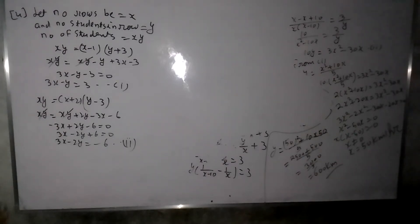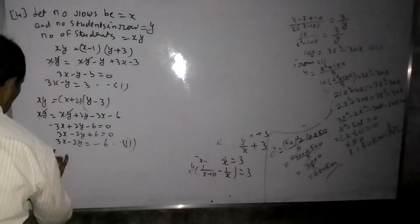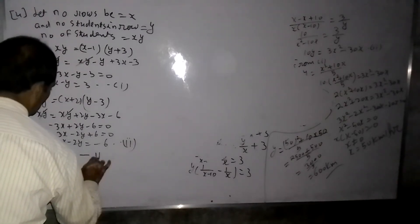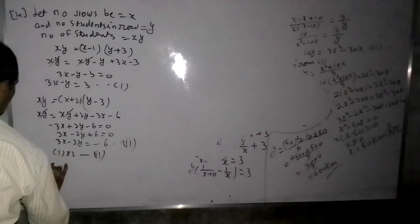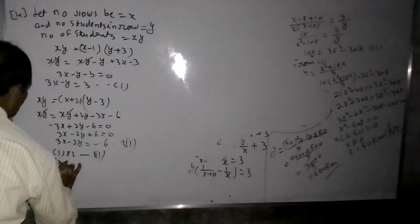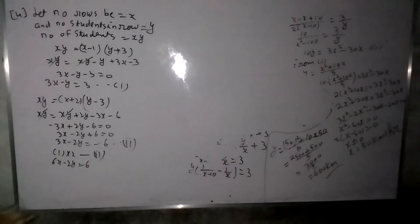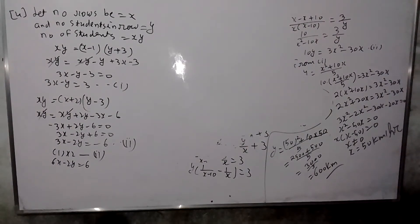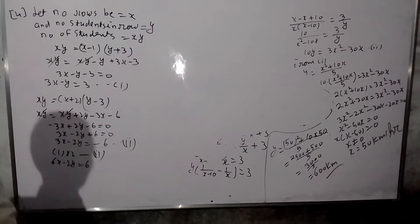Let's start again. Coefficient simplification: 1 into 2 minus 6. So we get 6X minus 2Y plus 6. From the equations: 3X minus 2Y minus 6. Yes, that's correct.